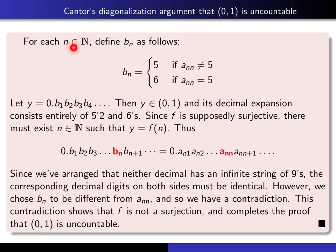Now, for each n in the natural numbers, we're going to define an integer bₙ as follows. What we want to do is we want to define it so that it's different from aₙₙ. So we define bₙ to be 5 if aₙₙ is not equal to 5, and we define it to be 6 if aₙₙ is 5. So we've made sure that bₙ is different from aₙₙ.